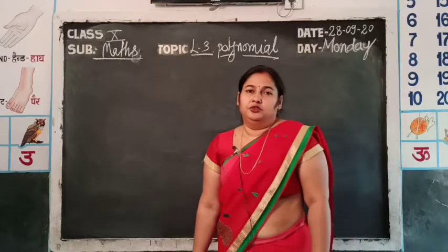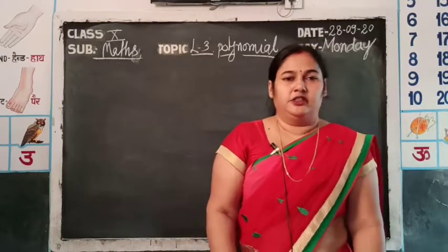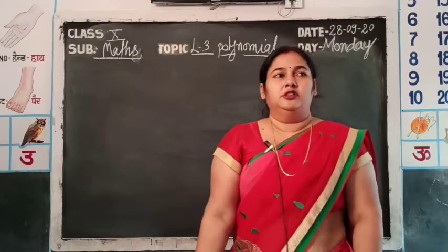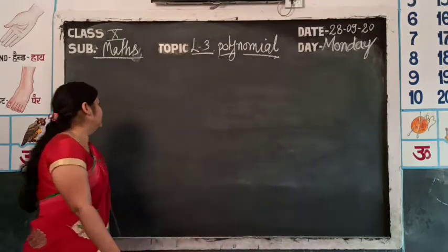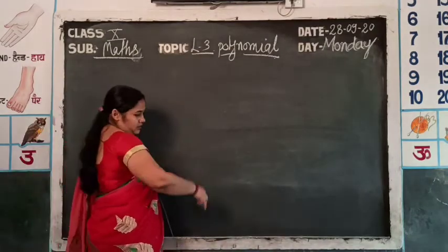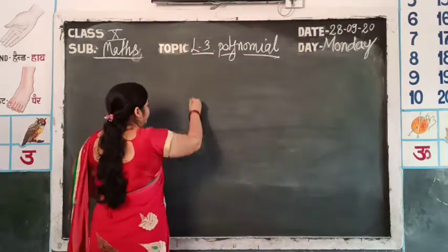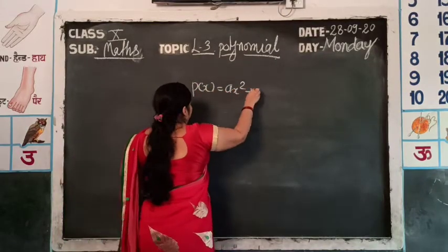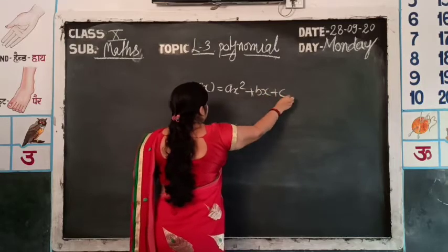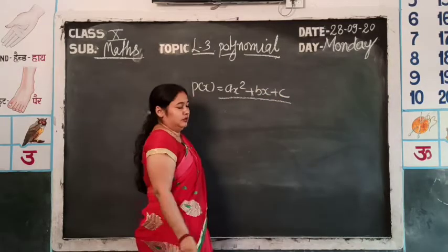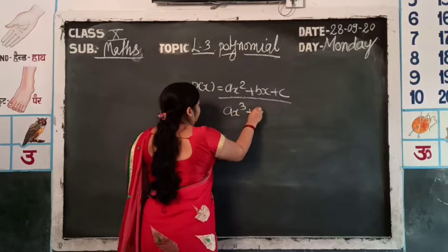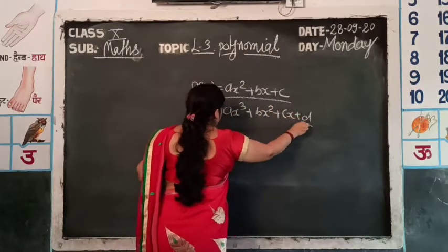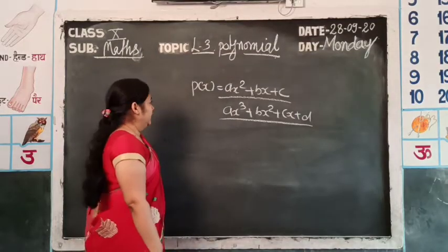Hello students, today we start a new chapter — lesson number three: polynomials. You know about polynomials from ninth class. The short form is P(x). Suppose P(x) has the form ax² + bx + c — this is a polynomial. Then ax³ + bx² + cx + d is also a polynomial.